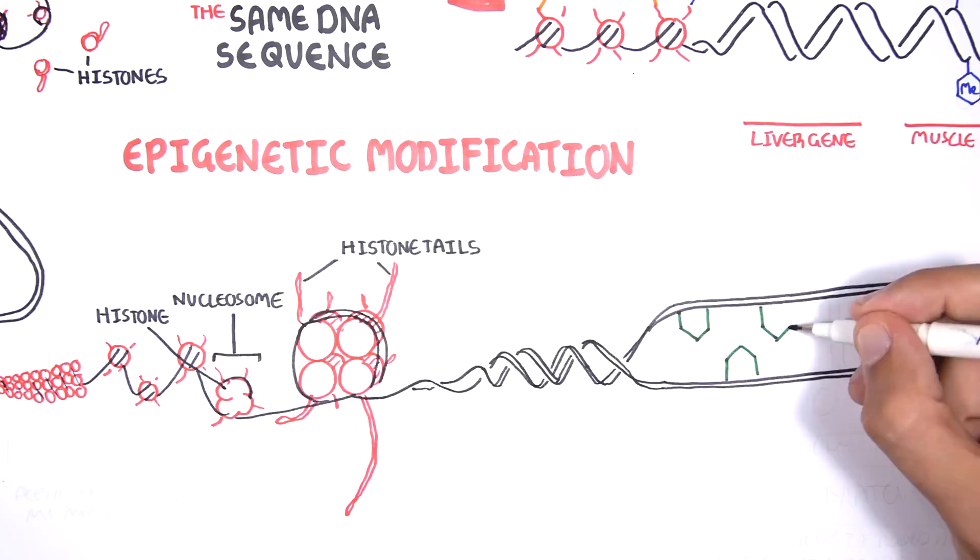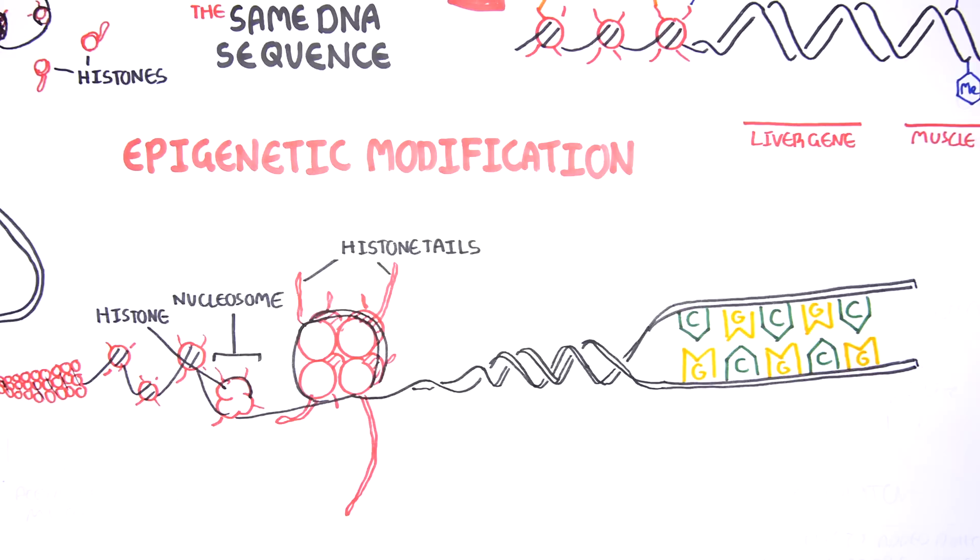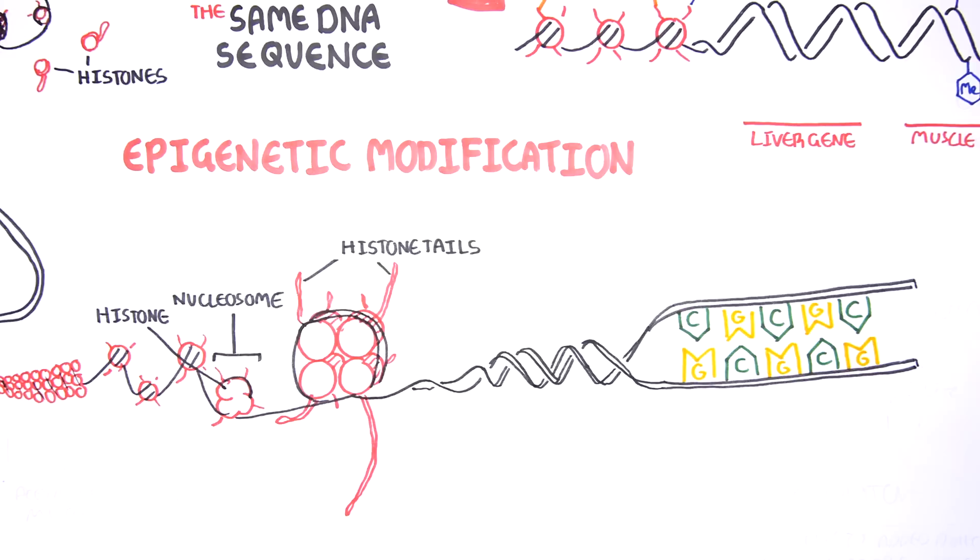DNA is made up of a combination of four nucleotides: G for guanine, C for cytosine, A for adenine and T for thymine. There are two main epigenetic modifications.